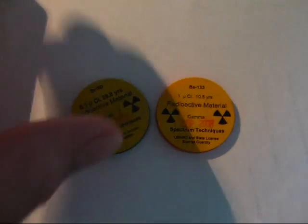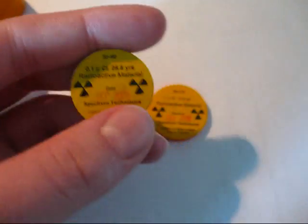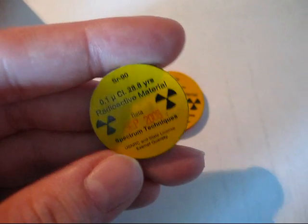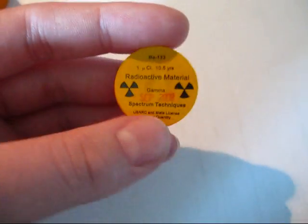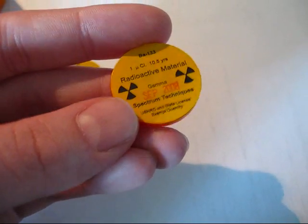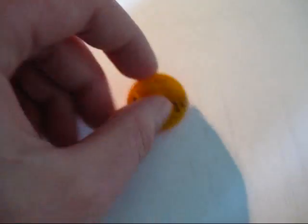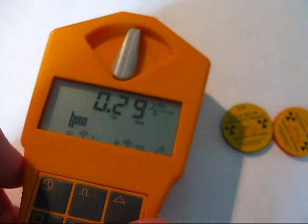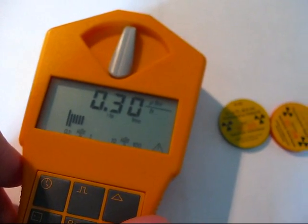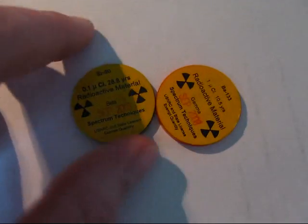We're going to use Strontium-90, which is a pure beta emitter, or rather pure beta emitter, and we're going to use Barium-133, which is a pure gamma emitter. This will make a difference, as we will see. This will be a Geiger-Müller detector, so let's examine the sources.